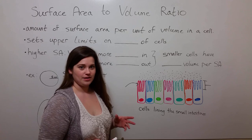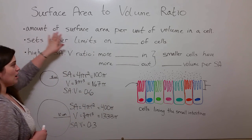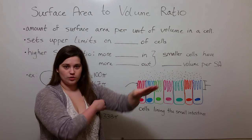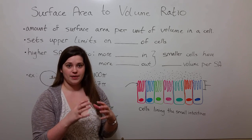First, let's talk about the definition. Surface area to volume ratio is the amount of surface area per unit of volume in a cell. It's important because it sets upper limits on the size of cells.